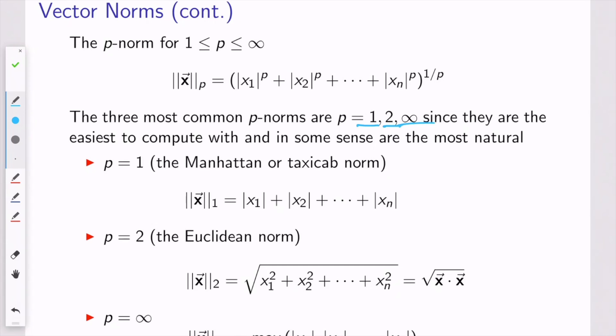So if p equals 1, you just plug into the formula here, and all you're doing is summing up the absolute values of all the elements of the vector. That's sometimes called the Manhattan or the taxicab norm.